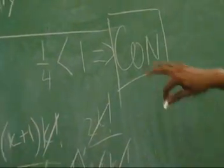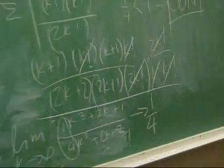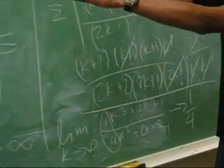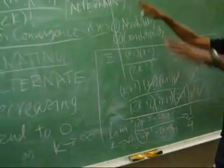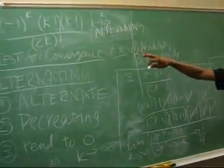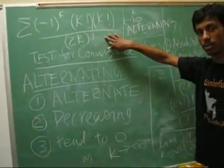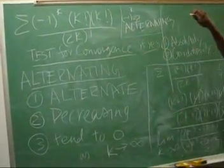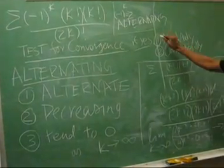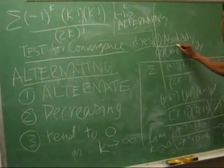Since the absolute value series converges via the Ratio Test, the original series is absolutely convergent.